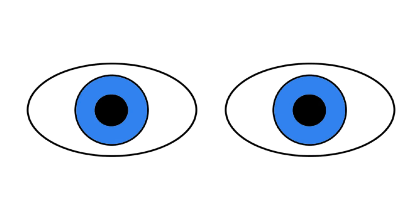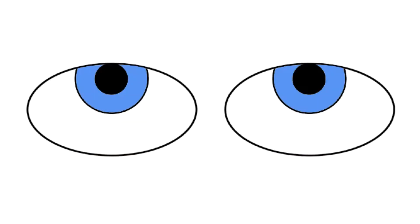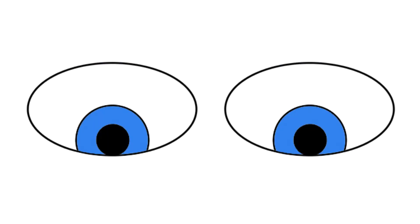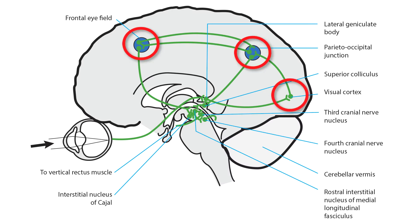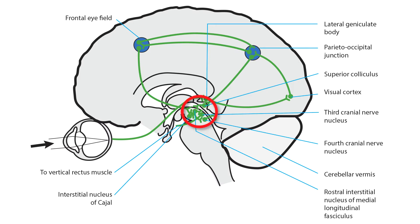If you wish to make upward or downward saccades, the brain signal must travel from cerebral gaze centers in both cerebral hemispheres down to the midbrain, where vertical eye movements are organized. From there, separate pathways carry the signal for upward and downward saccades.